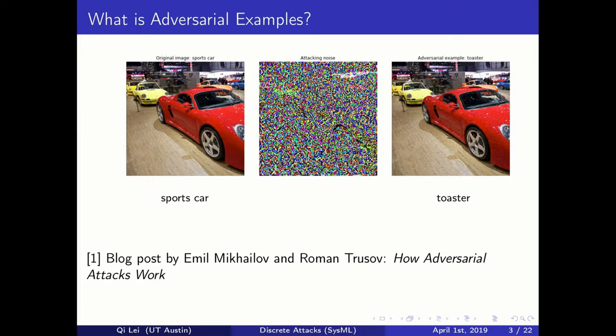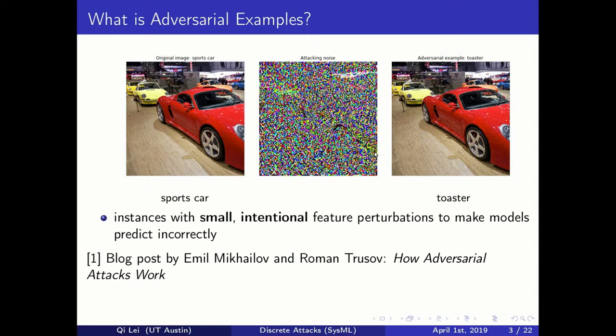We know that deep learning methods have been proven very successful in many different domains. However, one problem is their vulnerability to adversarial attacks. This left image is an original input that is classified correctly as a sports car. However, by adding some small attacking noise, it is then labeled by the deep learning model as a toaster. This reflects our definition of adversarial examples, which are instances with small intentional feature perturbations to make models predict incorrectly.